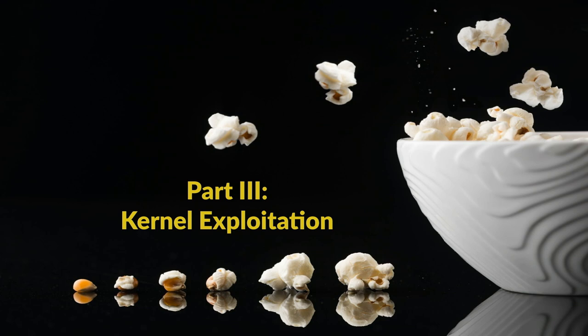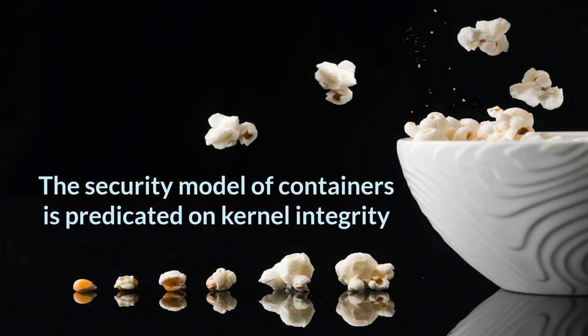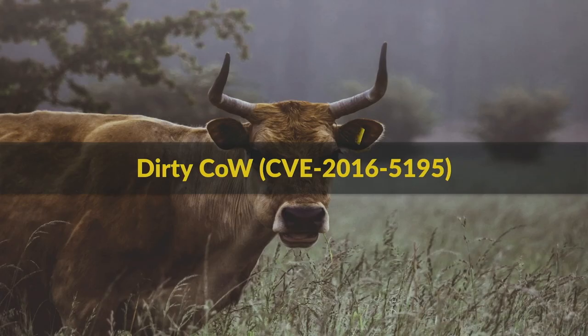Now on to volume three: escaping via kernel exploitation. The security model of containers is predicated on kernel integrity. We'll discuss how any kernel vulnerability enabling arbitrary code execution in the kernel can also enable container escape, but we'll start with a vulnerability that doesn't grant kernel code execution but still allows escape. To demonstrate this, we'll walk through how exploiting Dirty COW — the implications of which are mostly in user land — can be used to break out of a container.